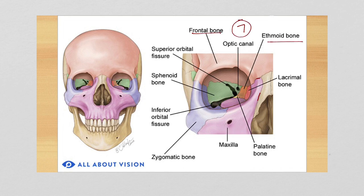These seven bones are something you need to know for your board's exam. You can have injury to one bone without disrupting the entire orbit. Most commonly in athletic training, we see injuries to the frontal bone — the superior portion of the eye orbit — and to the maxilla, the most inferior medial portion.